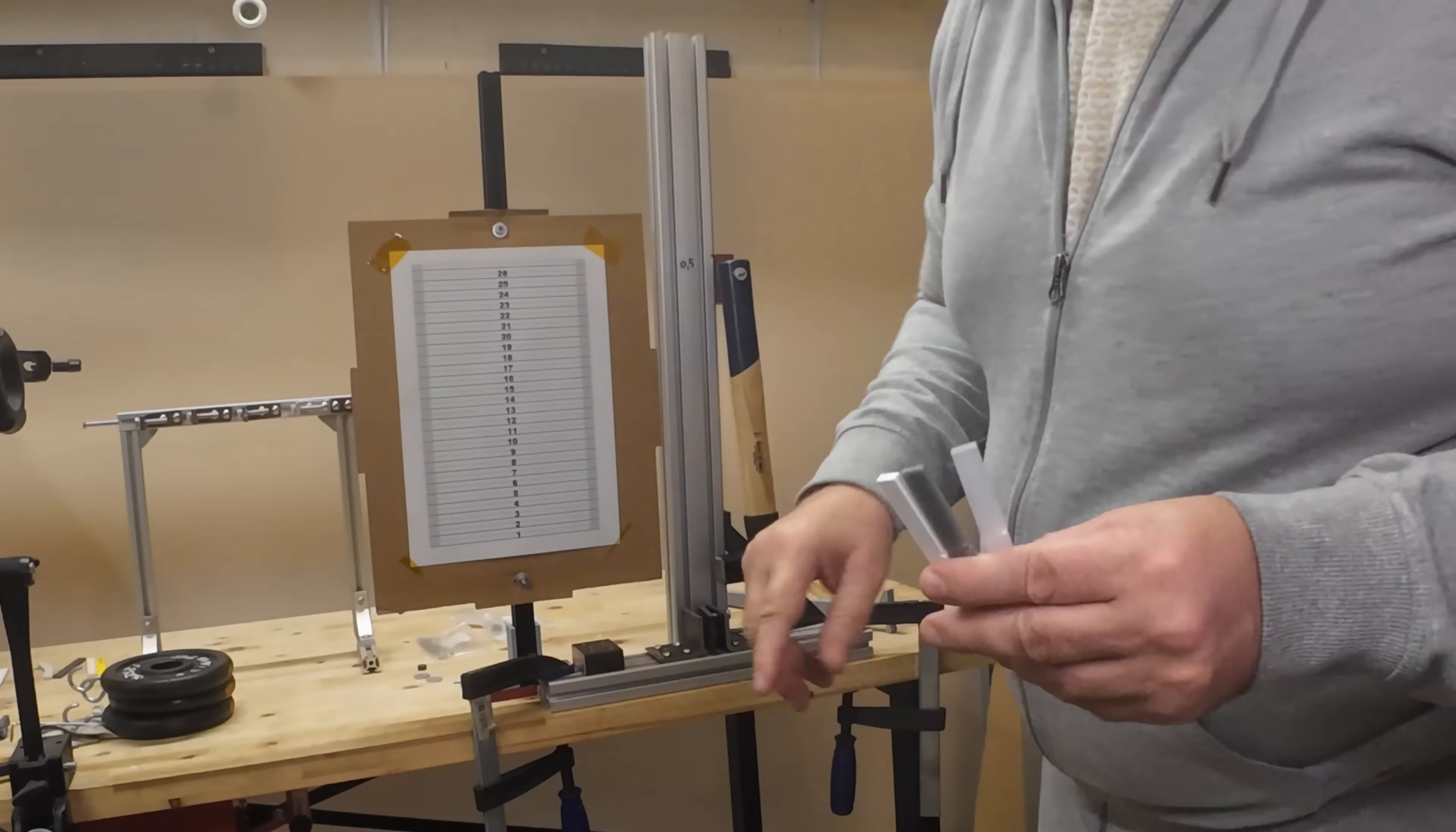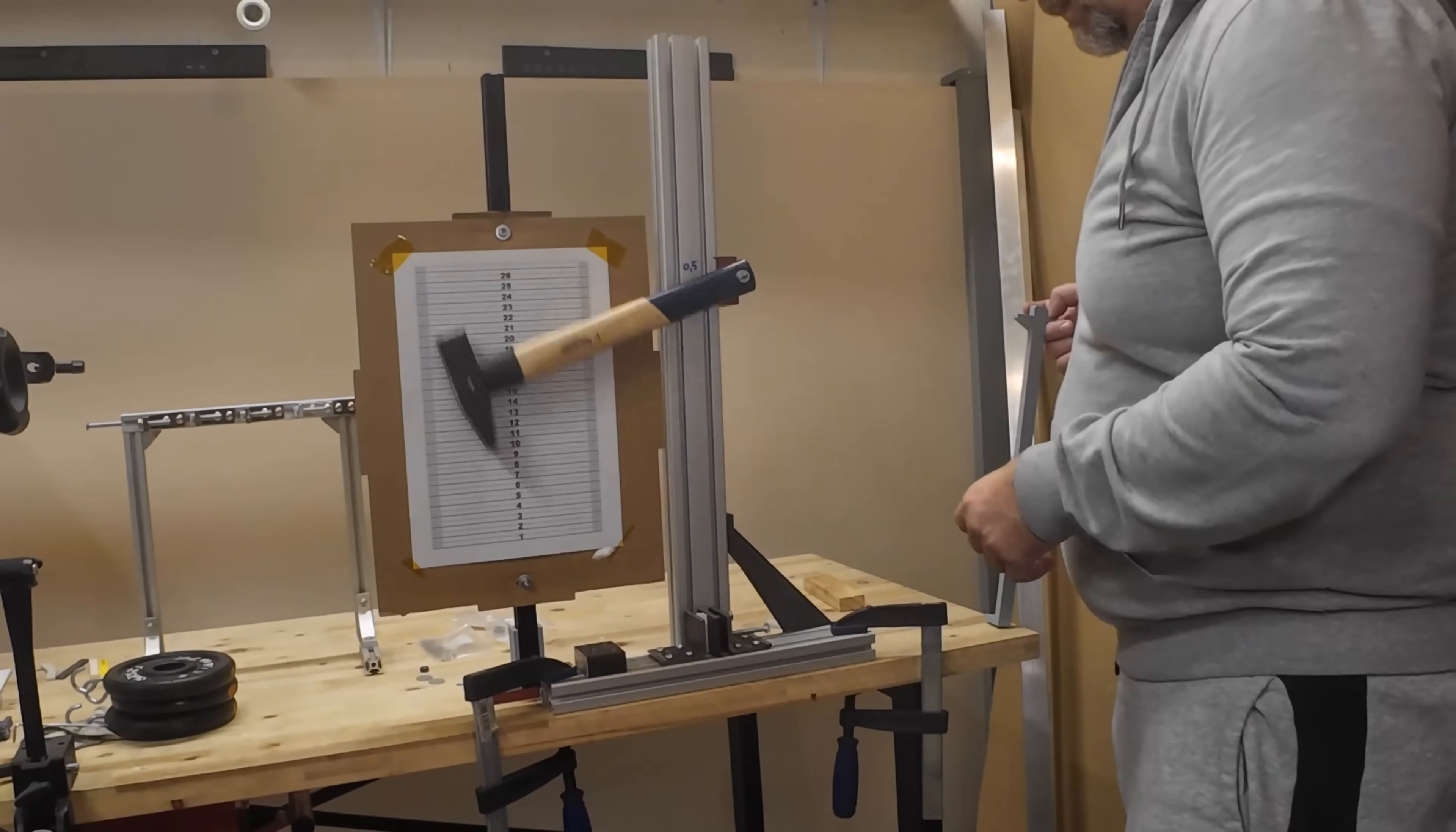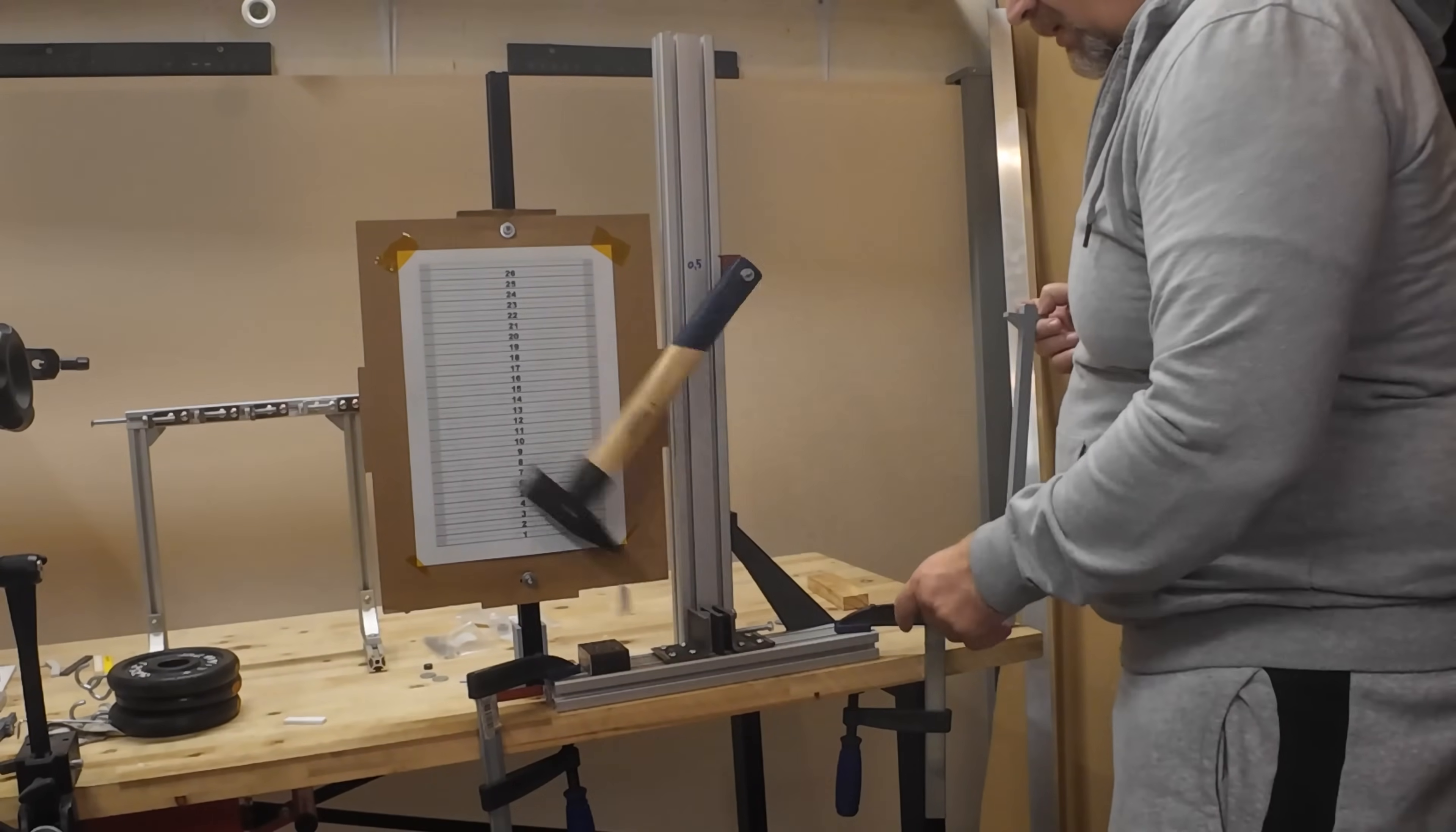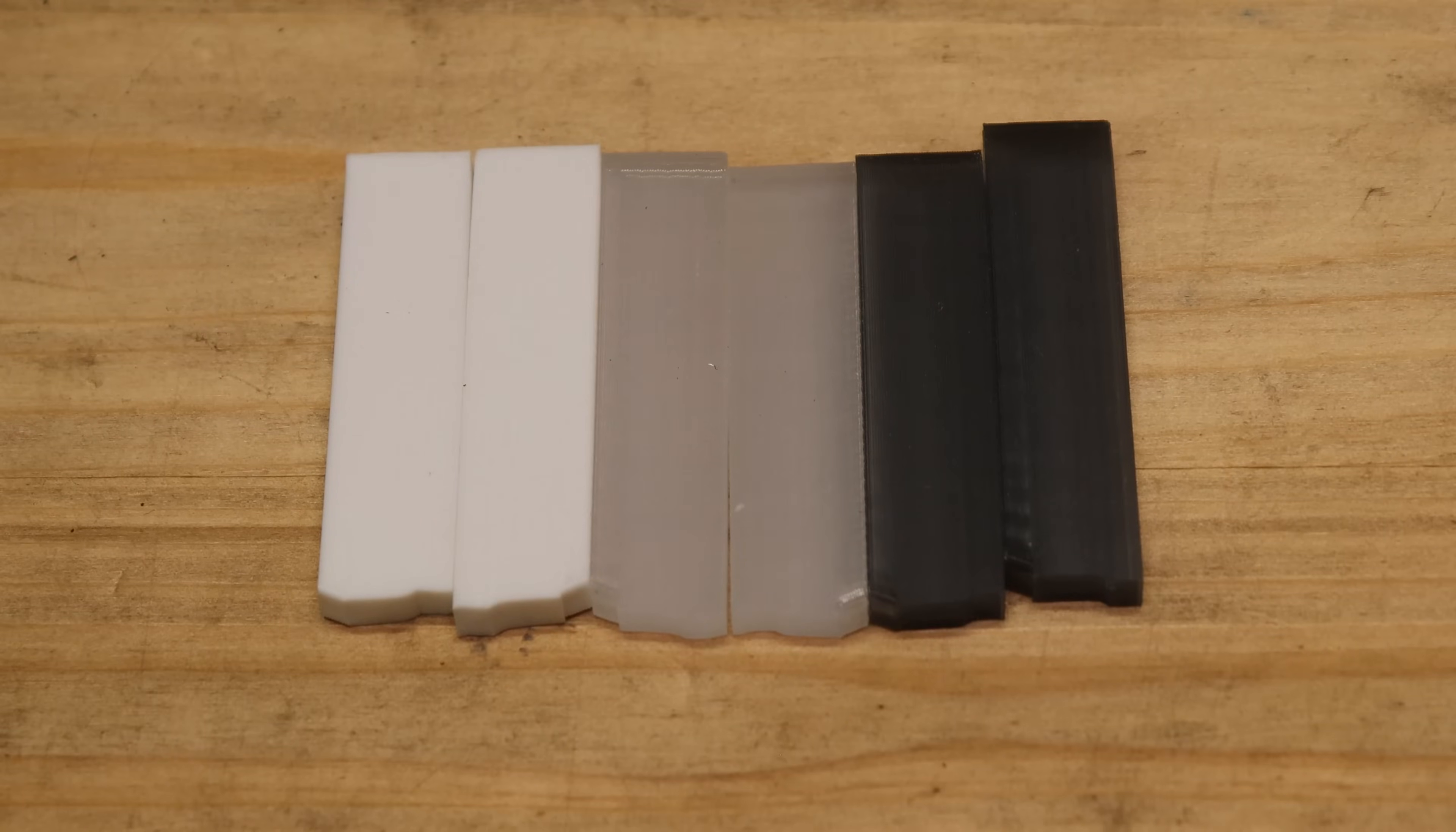And now guys to the impact test with this half kilogram hammer. White, zero position. Transparent, black. I'm not sure at this moment, but I thought it's a tougher material, but let's analyze the footage.